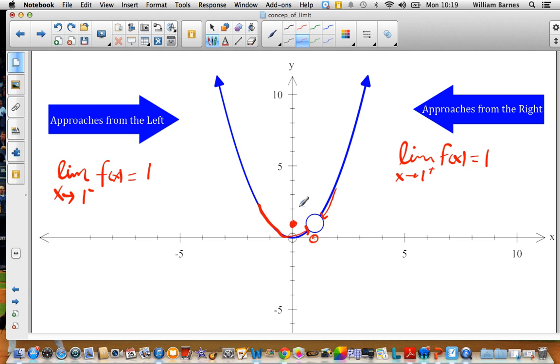So what I can say from this, based on having these two things, I can then make the conjecture. If only if these things are true, I can say this. I need to have both of these things truly equal to the same number. Then I can say the limit as x approaches one of f of x is equal to one.